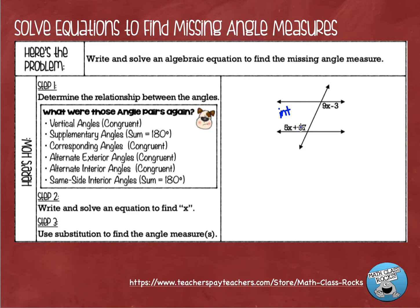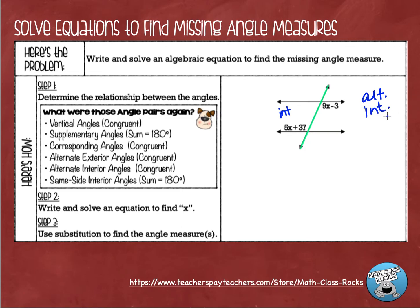What I have here are two interior angles. Looking at the transversal — one angle is on the left side and one is on the right side — that tells me that these are alternate interior angles. And what I know about alternate interior angles is that they are congruent; they are equal to each other.